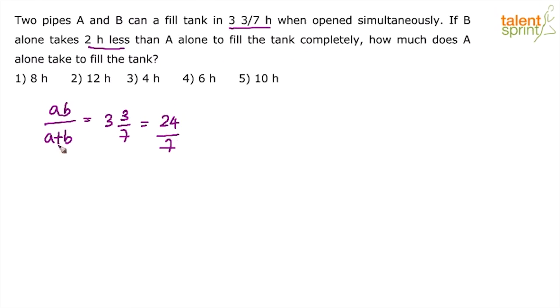They take 24 by 7 hours, right. You know this shortcut formula: when two persons or two pipes are working together, we can use AB by A plus B as a shortcut there. So 24 by 7.